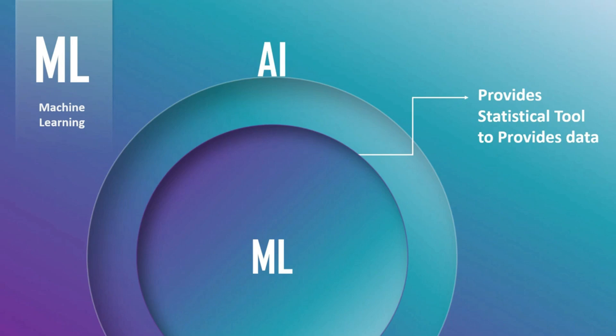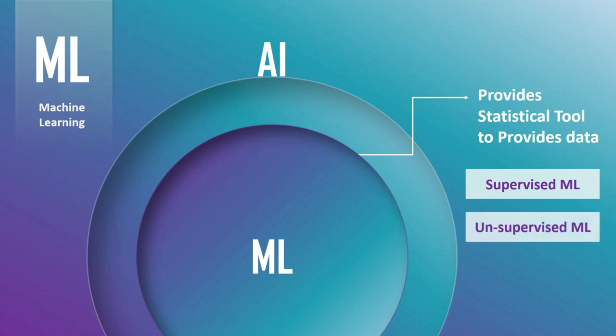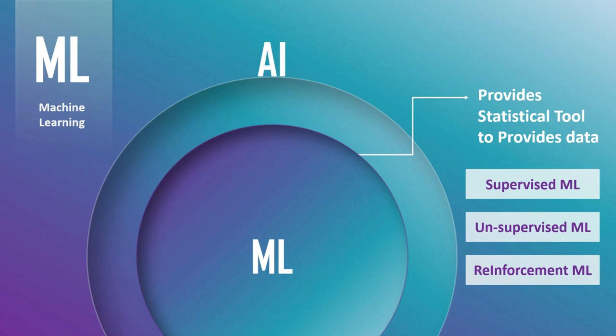In machine learning you have three different approaches. The first is supervised machine learning. The second technique is unsupervised machine learning. The third technique is reinforcement learning, which is also called semi-supervised machine learning.